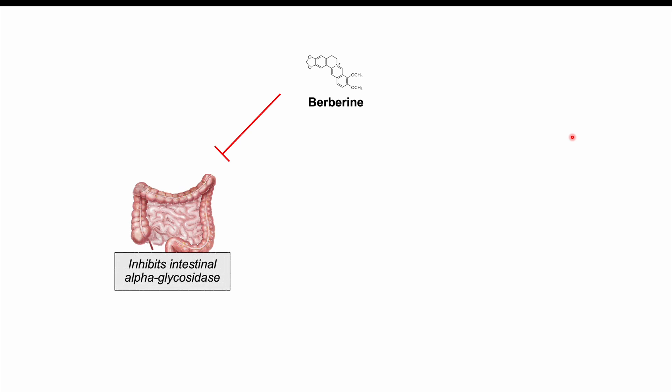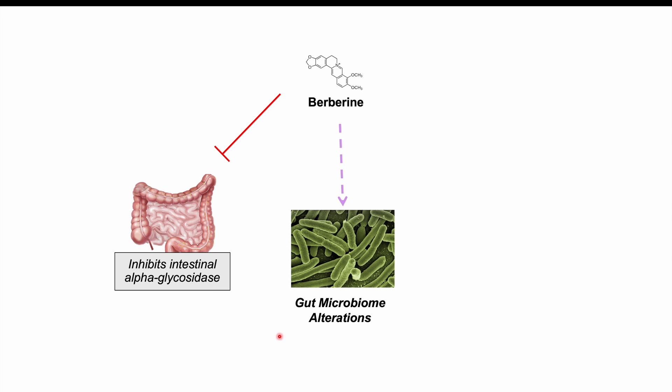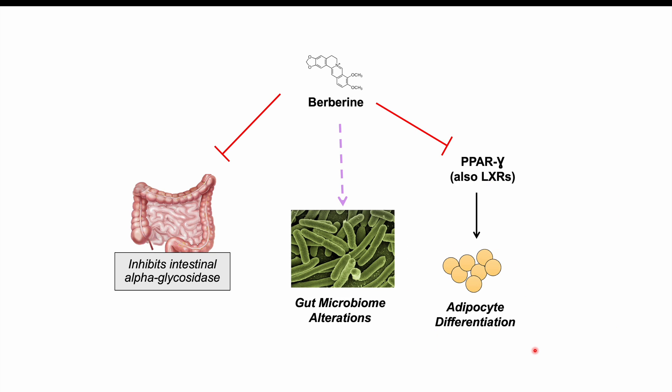Berberine can also have other effects, including inhibiting intestinal alpha-glycosidase — an enzyme in the intestines that helps break down glucose. If glucose isn't being broken down, it won't be absorbed from the gastrointestinal system. Berberine is also involved in changing the gut microbiome. Additionally, it inhibits PPAR gamma, or peroxisome proliferator-activated receptor gamma, and LXRs, which are involved in adipocyte differentiation — the differentiation of immature fat cells into mature fat cells.